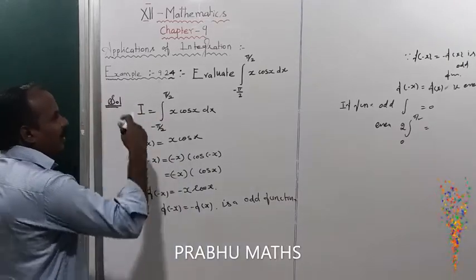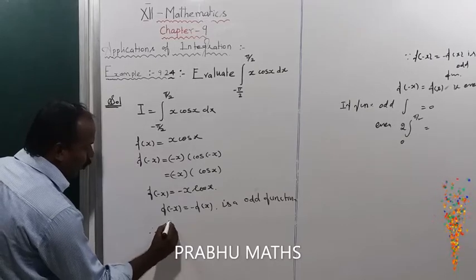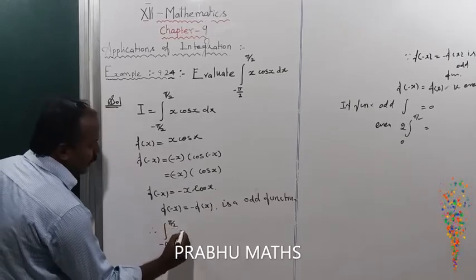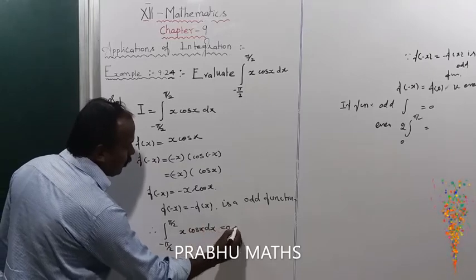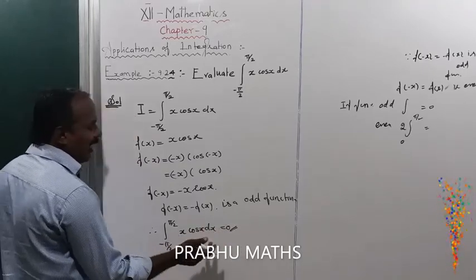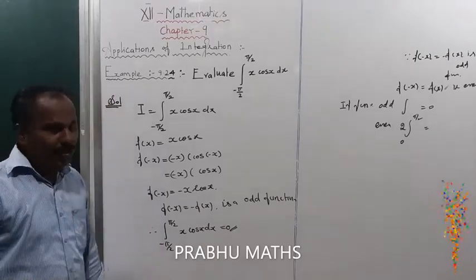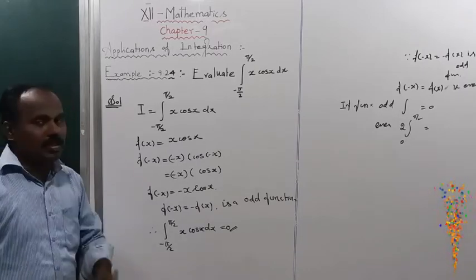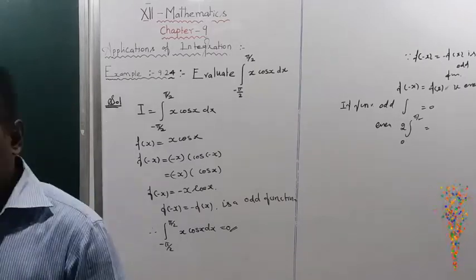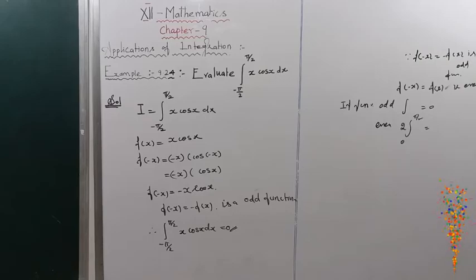Since the function is an odd function, there is no integration — the integral is going to 0. Therefore, the integral of x·cos(x) from minus 5/2 to plus 5/2 equals 0.